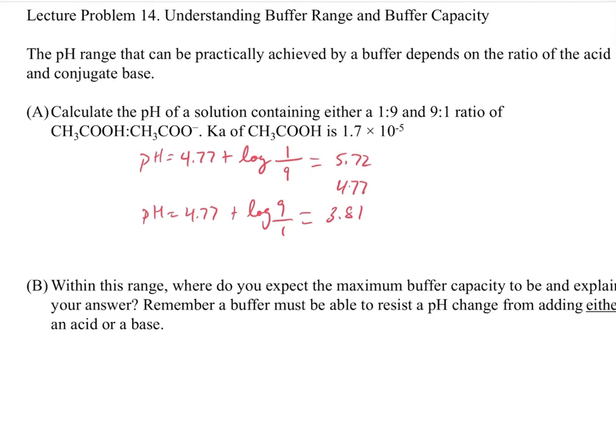The reason why we're doing this 1 to 9 and 9 to 1 is because we're basically going as far as saying we have 90% to 10%. That's getting to kind of an extreme for a buffer.